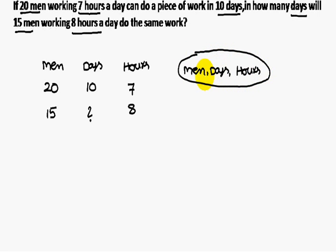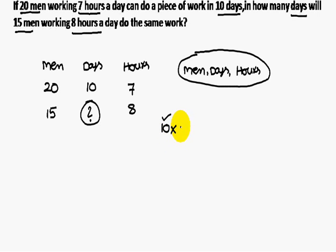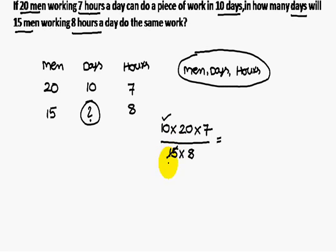What is being asked is the number of days. For the first statement, days = 10; corresponding men = 20; corresponding hours = 7. For the second statement, write 15 men and 8 hours in the denominator. Simplifying: 5 threes, 5 fours, 2 times, gives 35/3 days required.